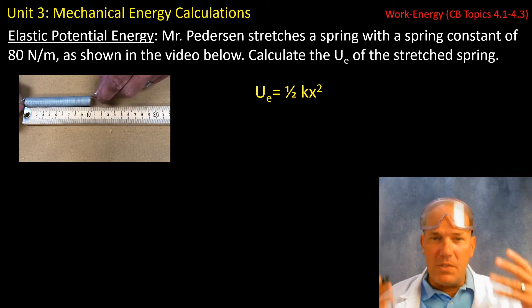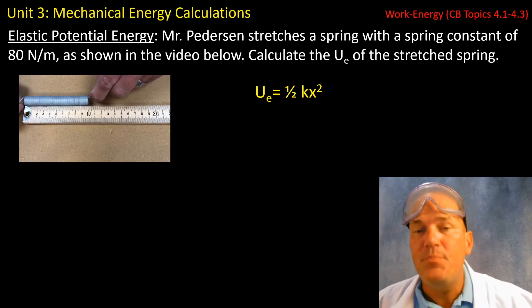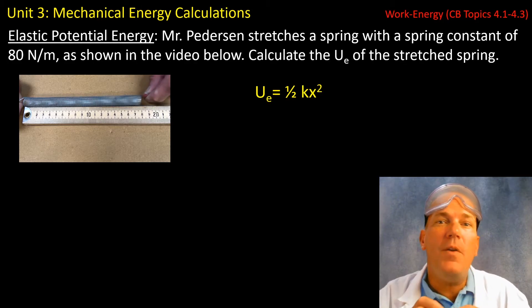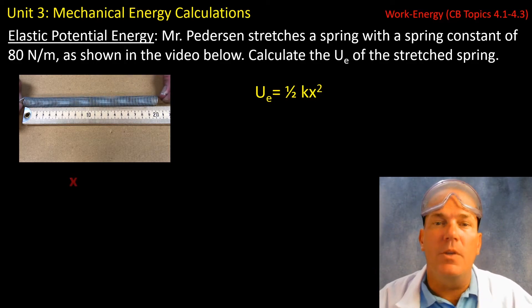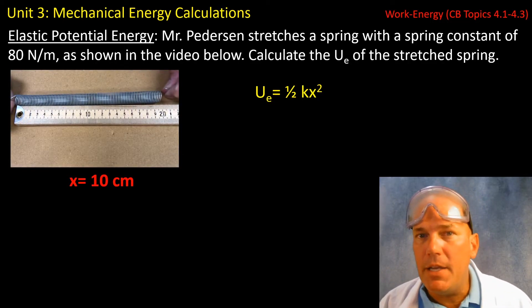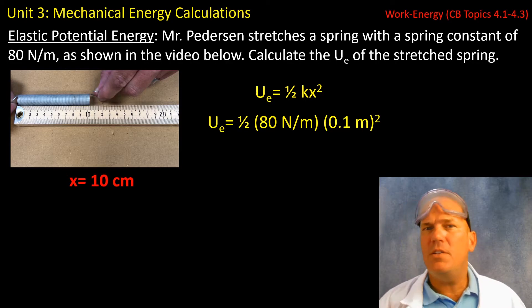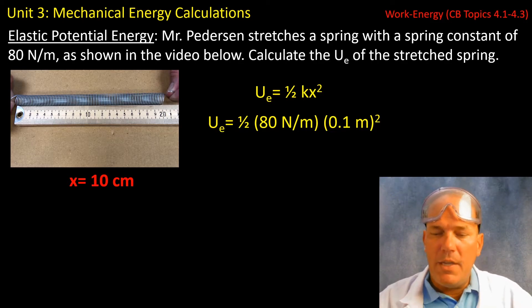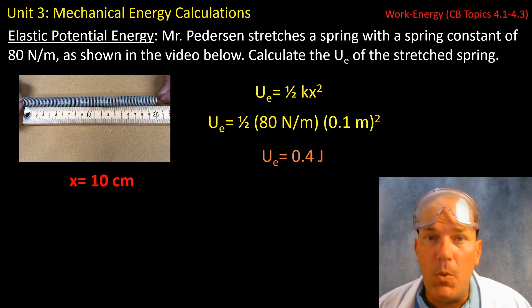So we're going to use this equation in which k is dealing with the spring constant, in this case 80 newtons per meter. And the x is dealing with the displacement of the spring. So how far is the spring extended or compressed? That's what that value is. So from the video, you can see that I am extending the spring approximately 10 centimeters. Now putting this information into the equation and remembering to convert centimeters into meters, we get that the stored potential energy in its stretched state is 0.4 joules.